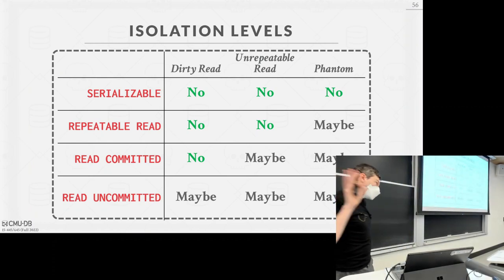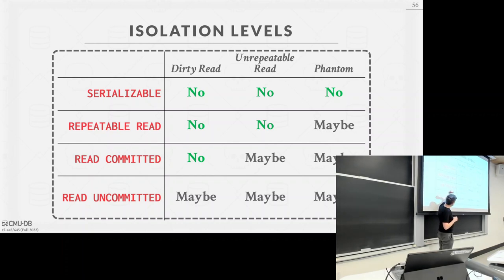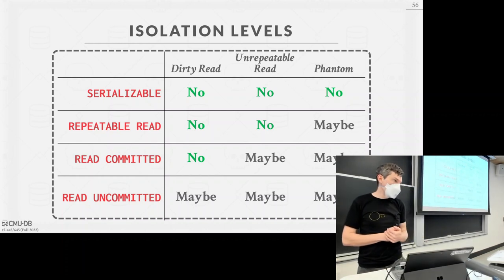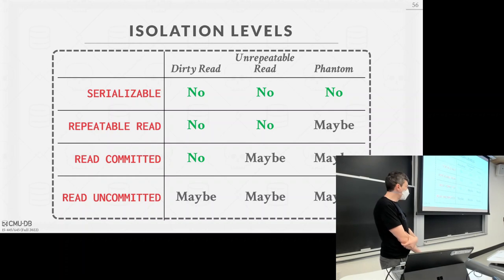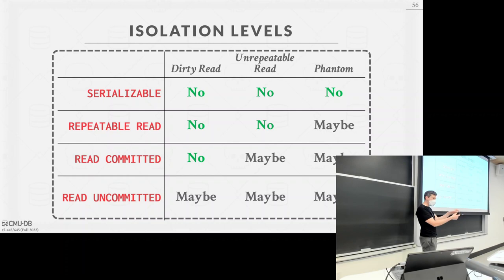Here's the chart of four isolation levels again. Read Uncommitted: all anomalies can happen depending on what other transactions are doing. At Serializable, the system should guarantee none of these anomalies occur. An unrepeatable read is reading the same object twice and getting back a different value. A phantom is scanning a range of data and seeing things appear or disappear on the second scan that weren't there before — that's the distinction.